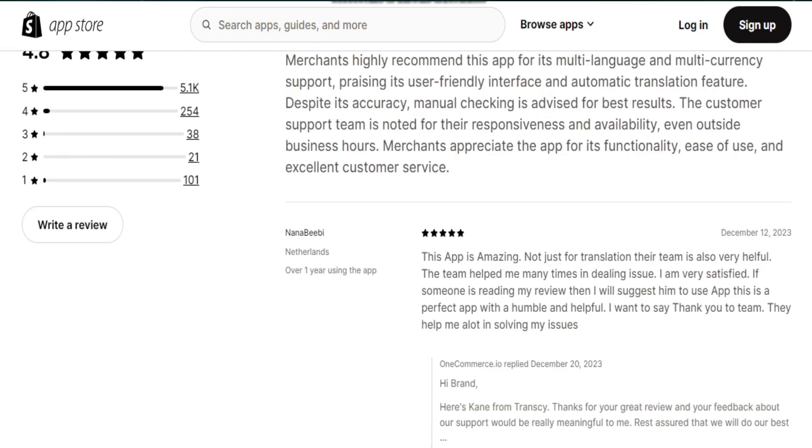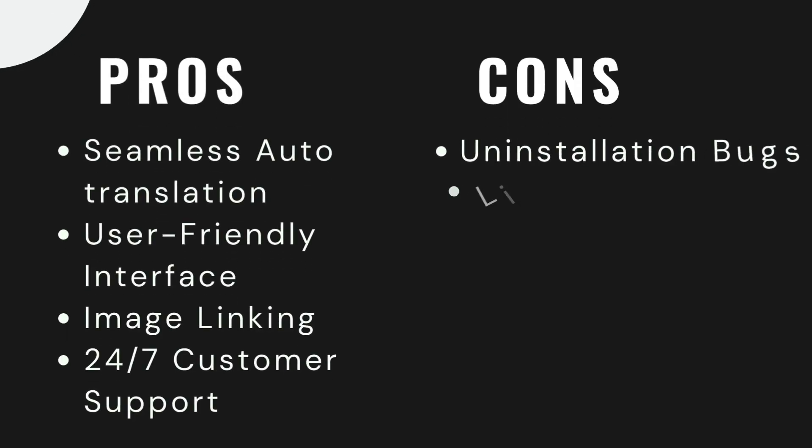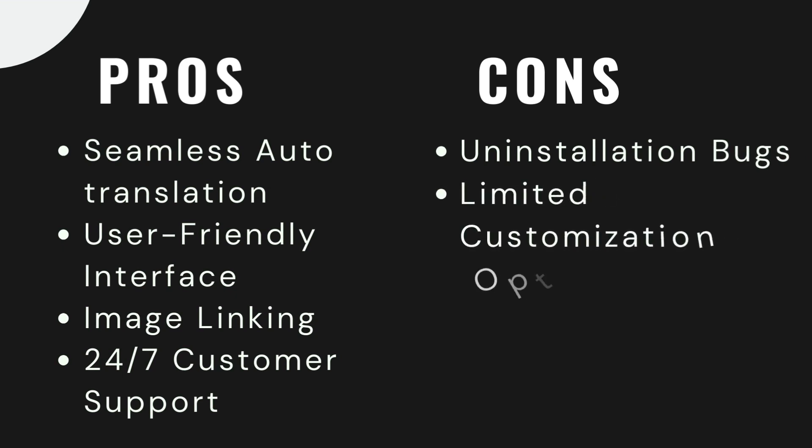Pros of Transi: it has seamless auto-translation, providing an efficient feature that streamlines the process of translating content. It also has a user-friendly interface, allowing easily managed translations from a single intuitive page. You can do image linking — associating images with specific languages adds a visual dimension to translations, aiding in more comprehensive localization. Additionally, Transi offers round-the-clock 24/7 customer support, ensuring prompt assistance whenever needed.